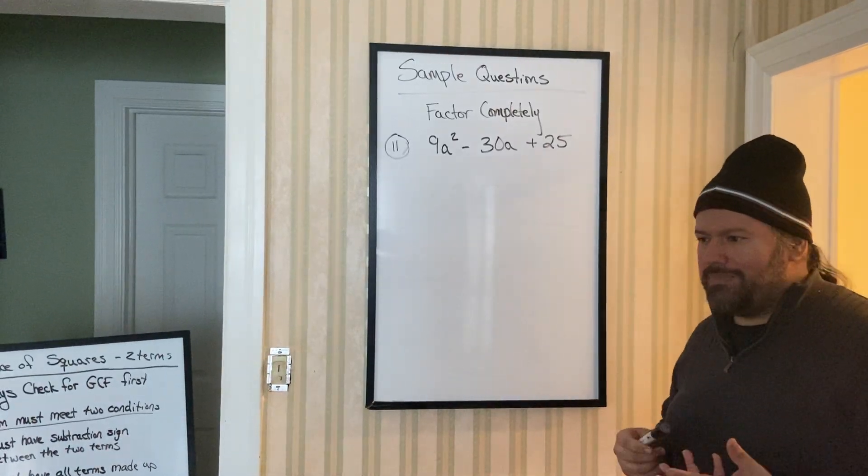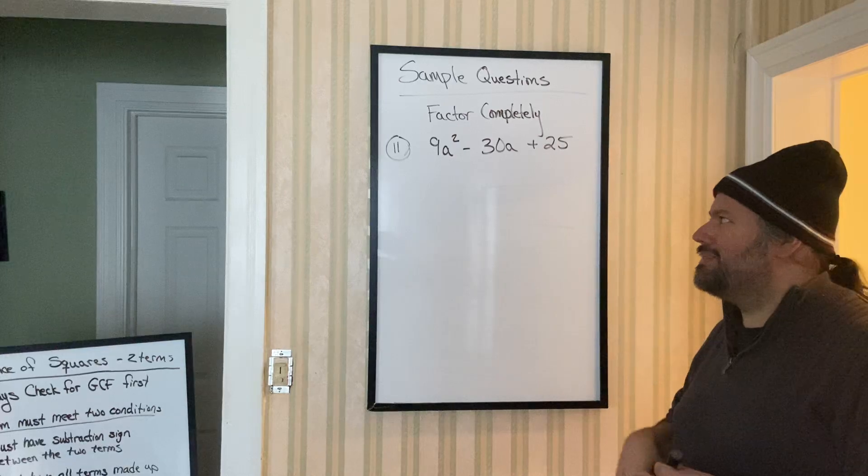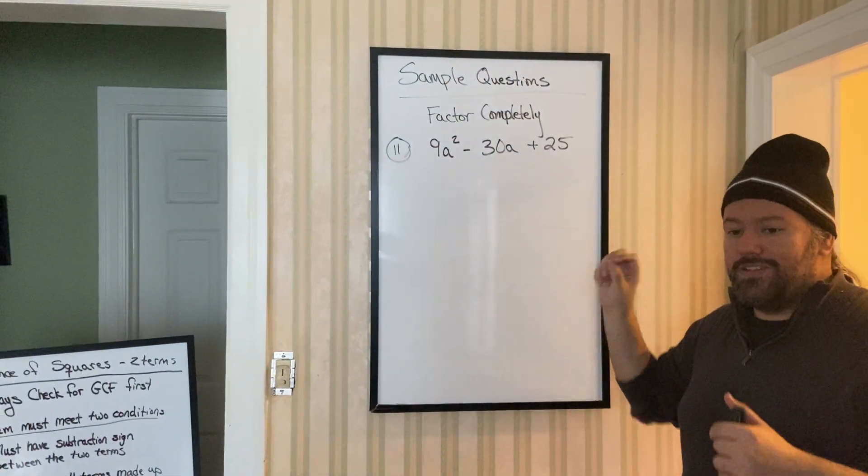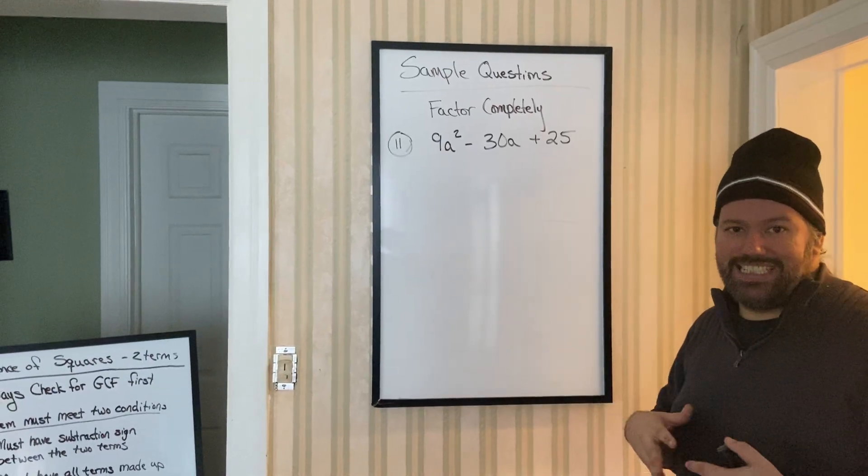Now a perfect square binomial basically means that you'll have a trinomial that will give you two parentheses that are exactly the same.